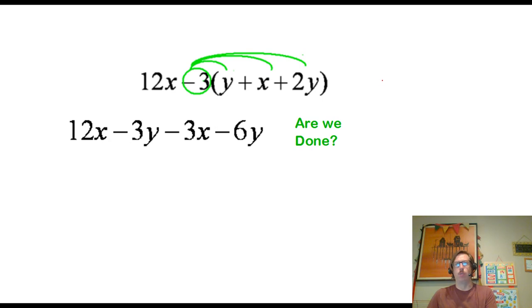So what's going to happen when we distribute that? Here's what it would look like. We would copy the 12X because nothing's happened there. We're going to get a minus three times the Y, plus in parentheses minus three times the X, plus minus three times the 2Y. So what's going to happen here? This minus symbol is going to affect the operation, or it can be simplified to the operation in front. So we end up with 12X minus 3Y, minus 3X, and then minus 6Y. And you might be wondering, are we done yet?